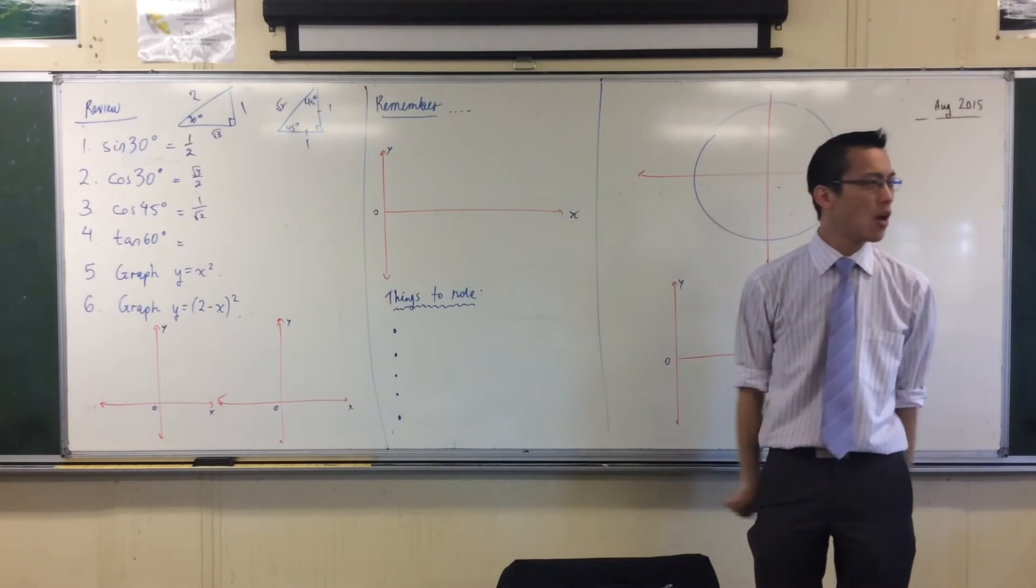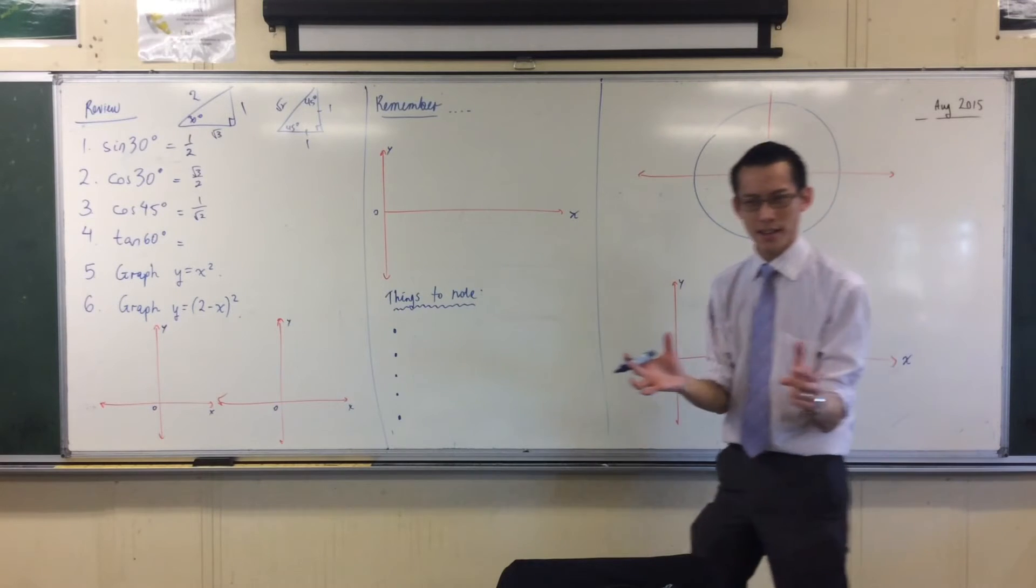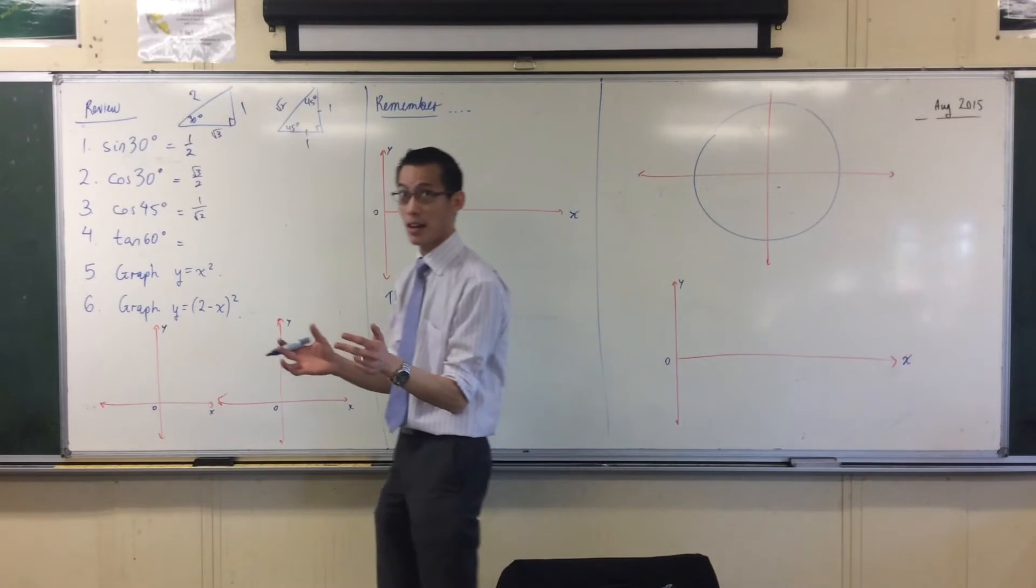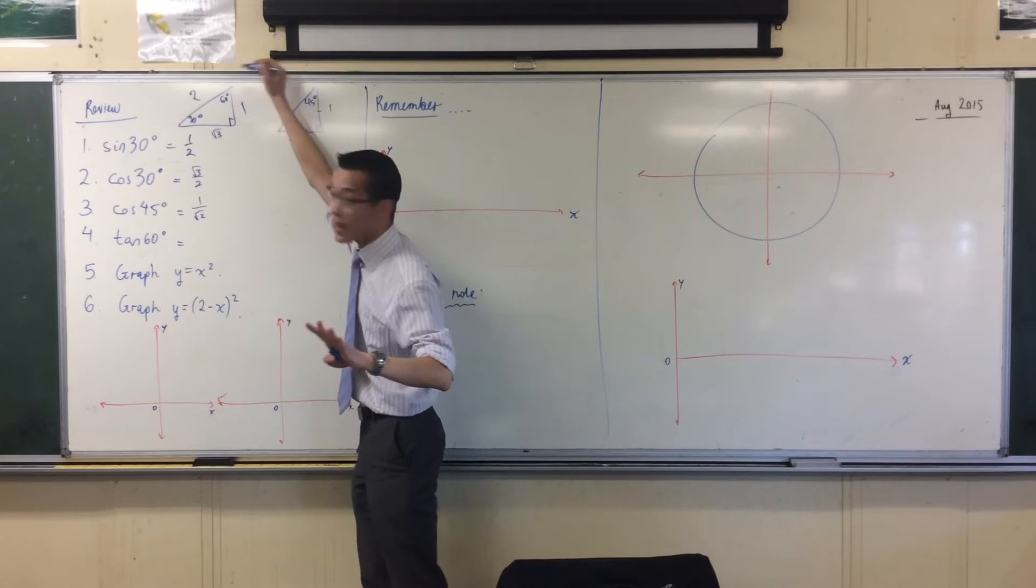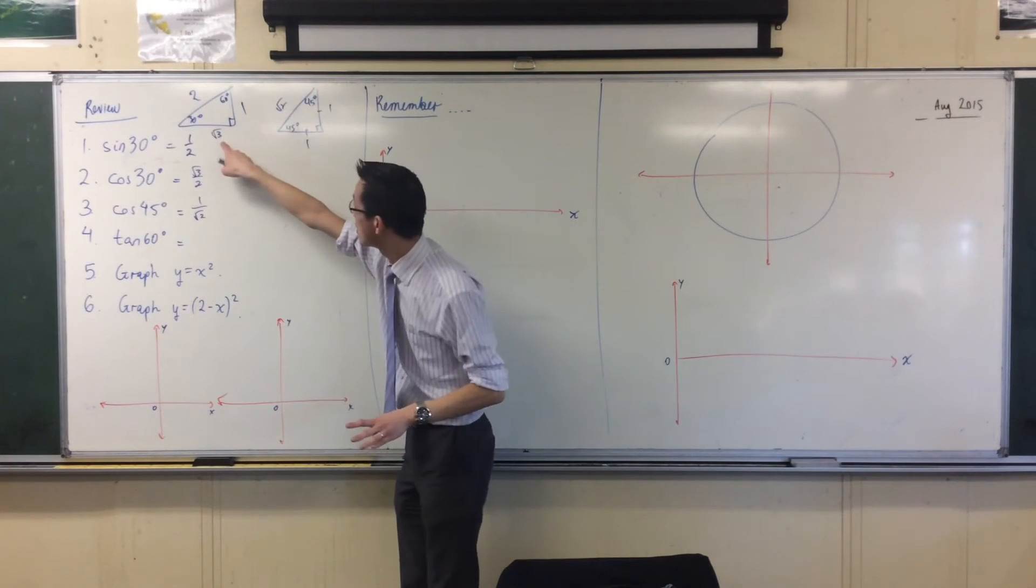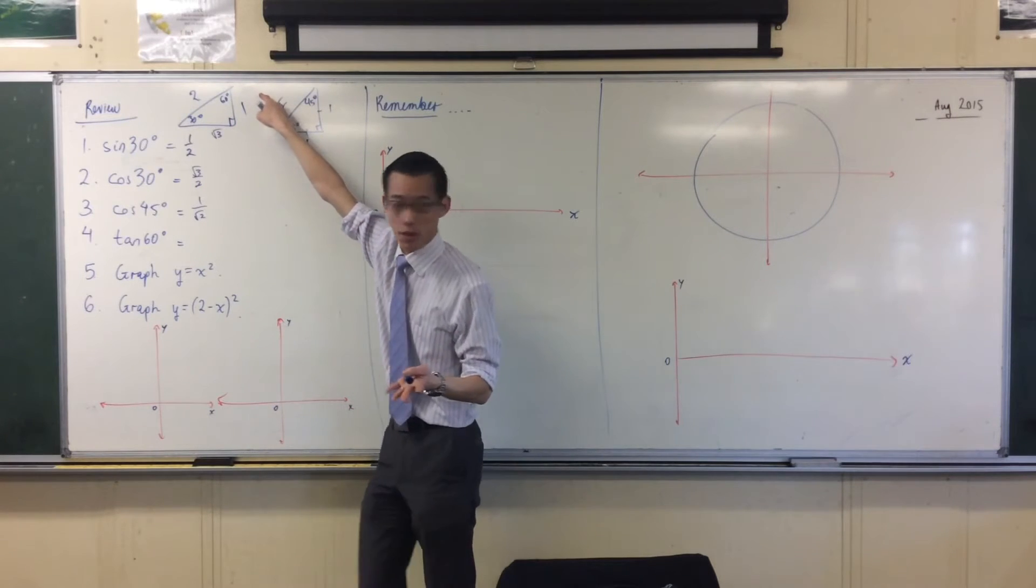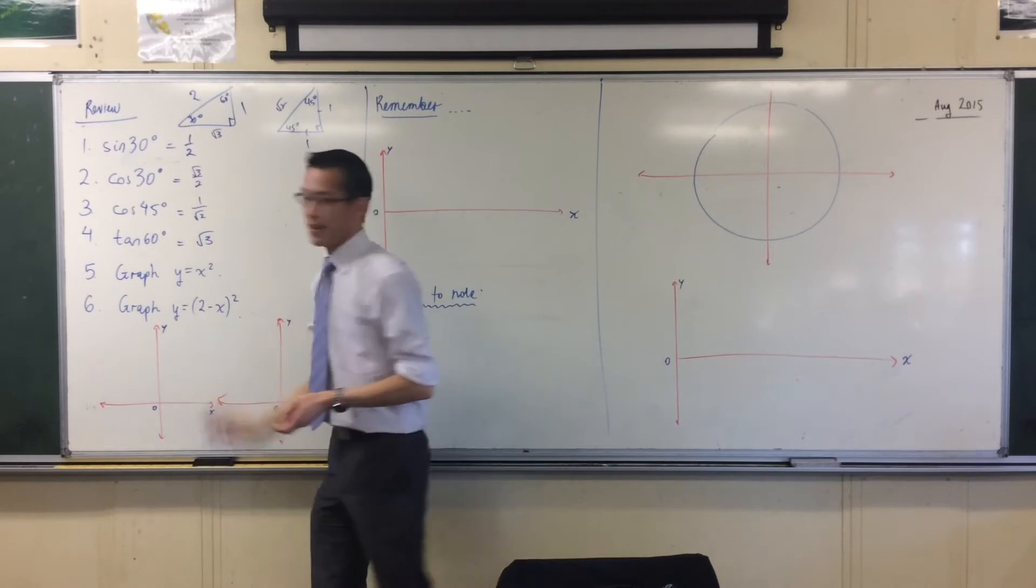Tan 60° - we can return to our first triangle for that one. What ratio of sides is tan? Opposite on adjacent. There's 60 up there, so you're going to get opposite on adjacent, it's just root three. Excellent.